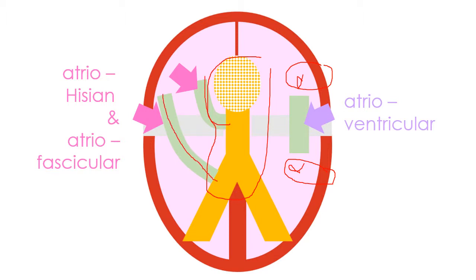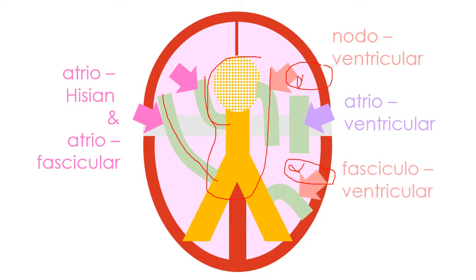Finally, the third type of accessory pathways are connections between the AV node and the ventricles — the nodo-ventricular connections — and connections between the fascicular system and the ventricle, the so-called fasciculo-ventricular connections.